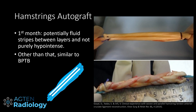With hamstring autografts, two tendons are taken and folded four times. These grafts can show high signal between the separate strands from day one because joint fluid can find its way in between the fibers. This fluid is aligned parallel to the strands and is considered normal. However, if you see this kind of linear fluid signal in a bone patellar tendon bone graft that would be abnormal. It's important to know which graft technique was used.